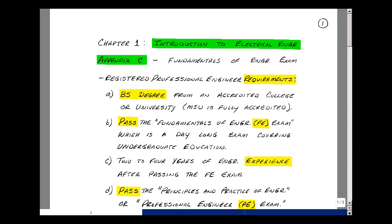This video deals with an introduction to ECE 345. You can find these notes in the course ebook in Chapter 1, starting on page 1. Chapter 1 in our textbook is called An Introduction to Electrical Engineering. But before I go into that, let me take a look at what's in Appendix C, which is the fundamentals of the engineering exam.